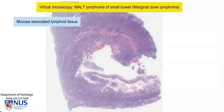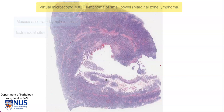MALT lymphomas, as the name suggests, do not involve lymph nodes, but rather they involve extranodal sites, such as the gut. They can also involve other organs, for example, the thyroid or salivary glands.